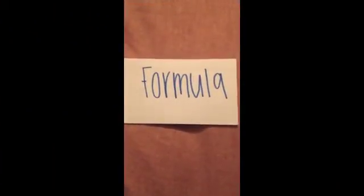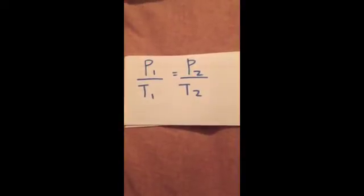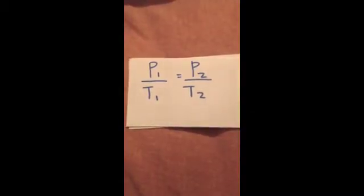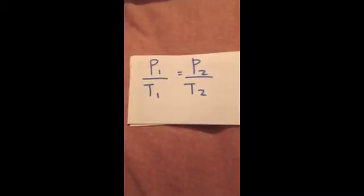We just finished our experiment, now we're on to our formula. Gay-Lussac's formula is P1 over T1 equals P2 over T2. Our initial pressure is P1, our initial temperature is T1, while P2 is our final pressure and T2 is our final temperature.